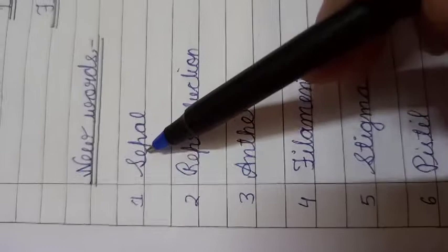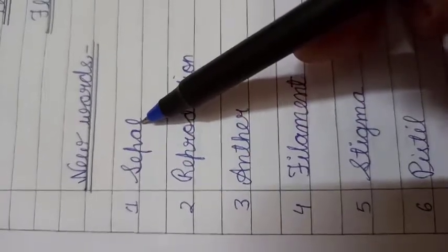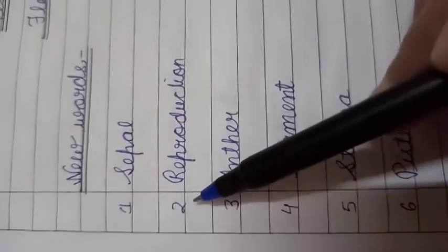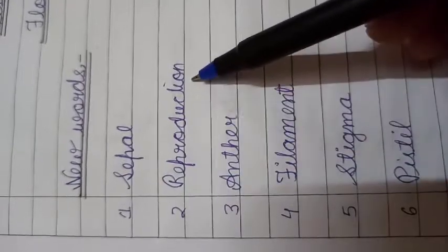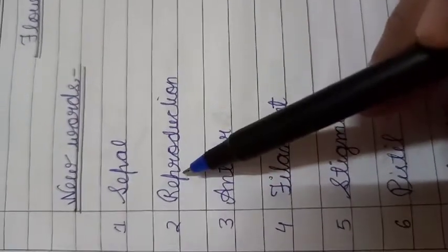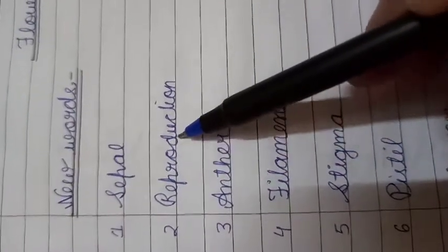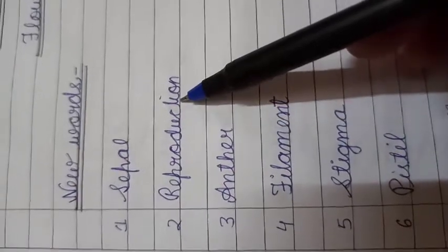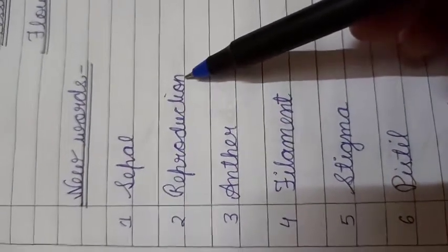So first word is sepal. S-E-P-A-L, sepal. Second is reproduction. R-E-P-R-O-D-U-C-T-I-O-N, reproduction.